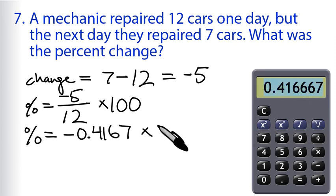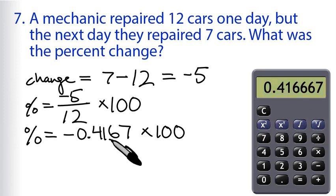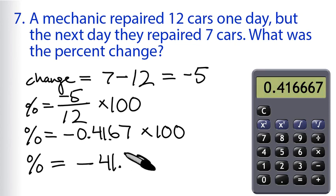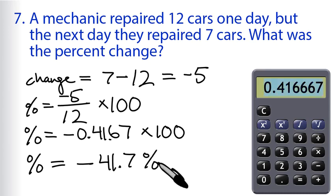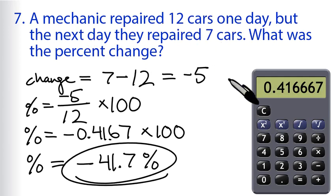We'll round that — there are more 6s, so we round up to 0.417. Multiply that by 100 by moving the decimal point. The percent change equals negative 41.7%. So if you repair 12 cars one day and the next day you repair 7 cars, the percent change is a 41.7% decrease.